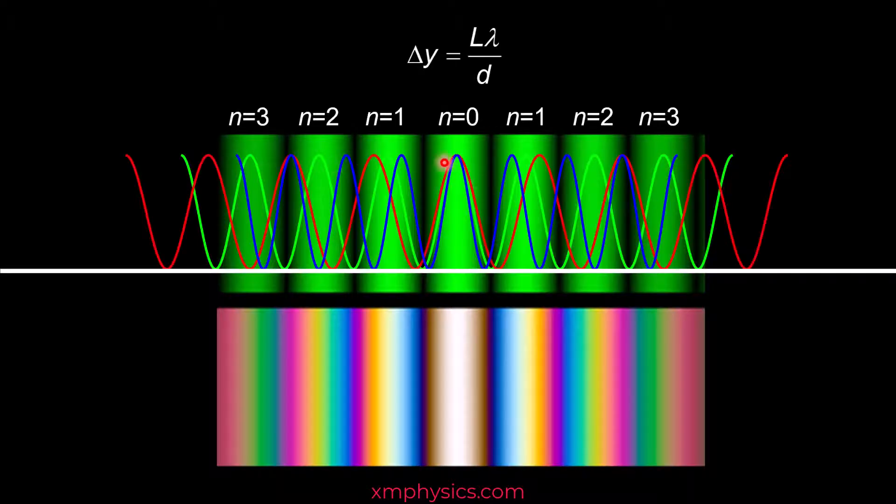So red light will be the opposite. Red light will have its bright fringes further spaced apart. Now let's see whether we can match the graphs, the intensity profiles to the actual colors we see here. So why is it whitish at the middle? Because the zeroth order bright fringes for all the wavelengths, all the different colors are formed here, right? So we have all the colors present here. So we get white light here.